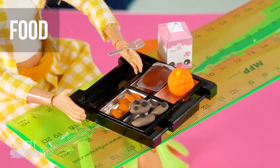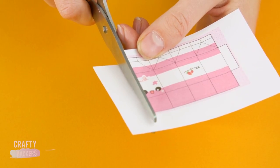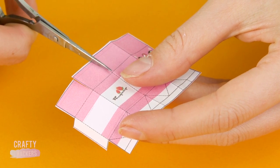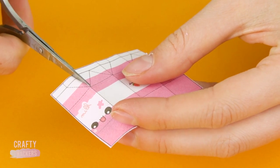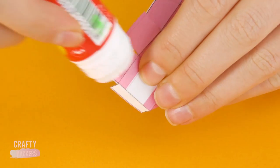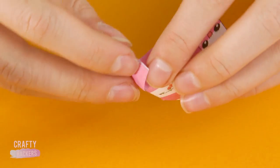Now who's hungry? Let's grab some lunch. First, print a pattern like this one from your computer and cut it out. Cut slits at the lines and glue your little milk or juice box together.